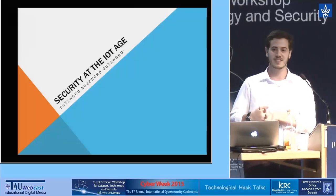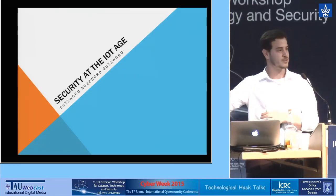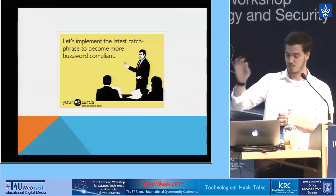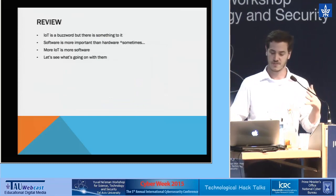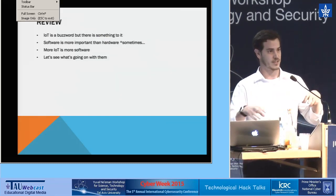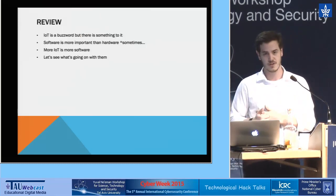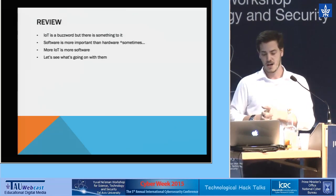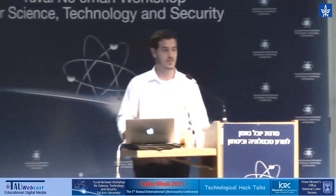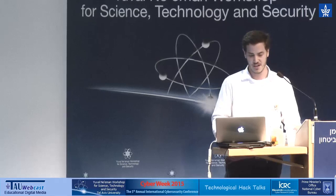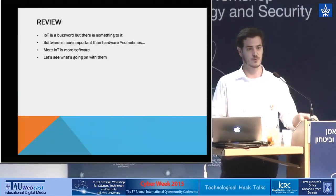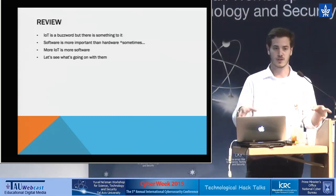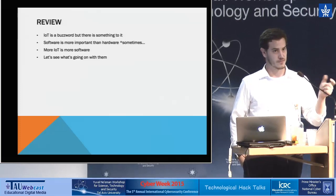I'm going to talk about Internet of Things today. It's a buzzword, but we'll try to decompose it and see what's inside. The concept is that everything will be on the internet — you'll be able to check your refrigerator, your garage door, and so on. But that means more software, more components, more bugs. Most vendors don't have access to both software and hardware to combine them well.